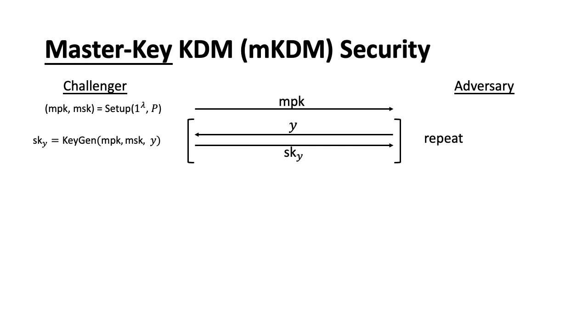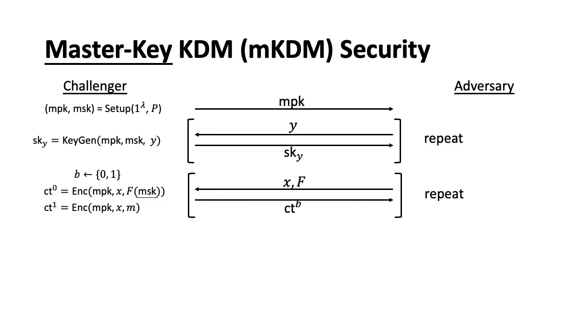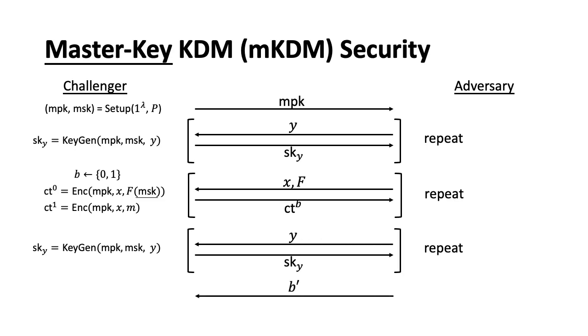After that, the challenger picks a random bit B, and the adversary issues multiple challenges. On each challenge with X and F, the challenger encrypts F(MSK) as CT0, and encrypts a random message M as CT1, and always returns CTB to the adversary. Then, the adversary can continue the key query, and the challenger responds by running the key generation. Finally, the adversary outputs a guess of B. At this point, we can give out the advantage of the adversary. If the advantage is negligible in the security parameter, then we say the schema achieves mKDM security.